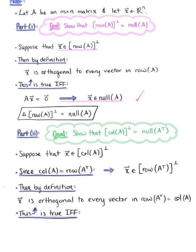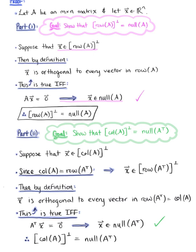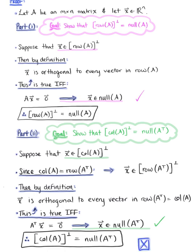This statement is true if and only if the transpose of matrix A times vector X equals the zero vector, which, by definition, implies that vector X is in the null space of A transpose. We've shown that vector X being in the orthogonal complement of the column space of matrix A implies that vector X is in the null space of A transpose, confirming equivalence and completing our proof.